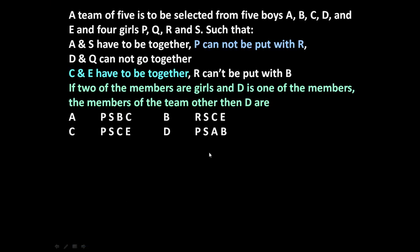The given problem is: a team of 5 is to be selected from 5 boys A, B, C, D and E and 4 girls P, Q, R and S, such that A and S have to be together, P cannot be put with R, D and Q cannot go together, C and E have to be together, and R cannot be put with B.